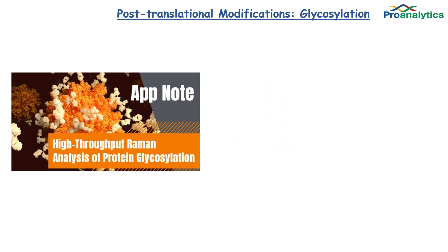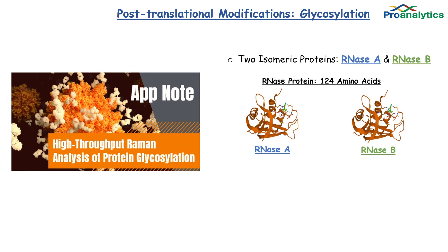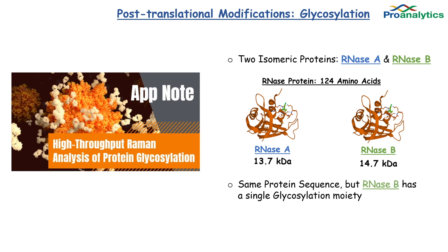Let's look at a quick dataset from the application note 'High Throughput Raman Analysis of Protein Glycosylation,' which can be downloaded from our website. Here we are looking at two isomers, RNase A and RNase B, which differ by a single post-translational glycosylation event. We will use the Tornado Raman to tell these two isomers apart. These types of post-translational glycan modifications are quite common in antibody production, so the ability to distinguish minor differences in protein structure has great importance in research and study.